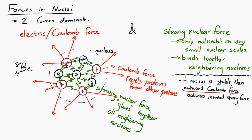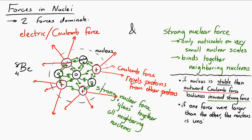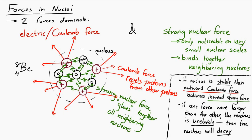If there is an imbalance between the Coulomb force and the strong nuclear force, that would cause an unstable nucleus. If the Coulomb force is stronger, the nucleus would try to fly apart. If the strong nuclear force is too strong, the nucleus would collapse. In the case of an unstable nucleus, the way the nucleus deals with this is it decays — by radiating alpha, beta, or gamma radiation until it becomes stable.